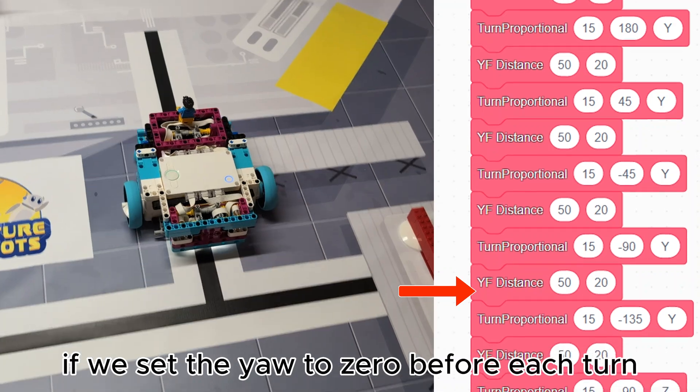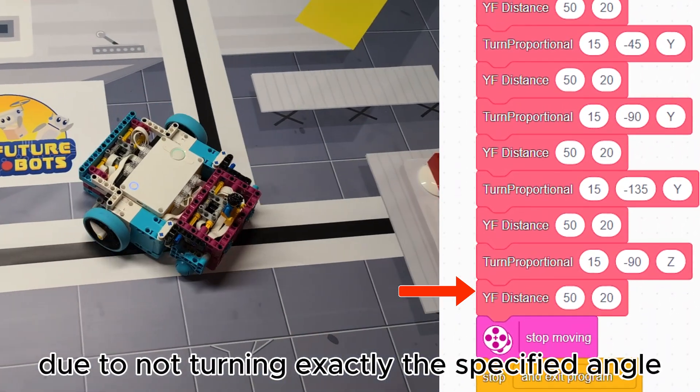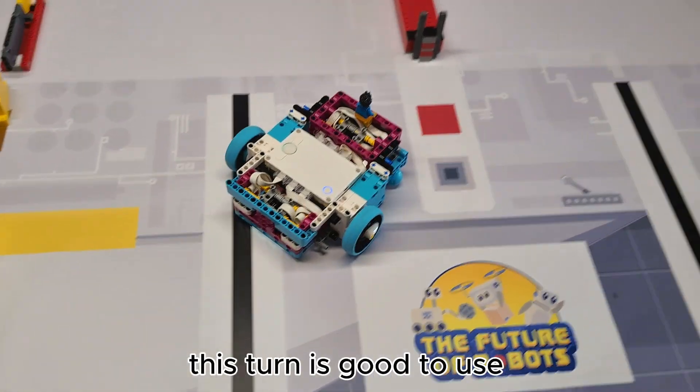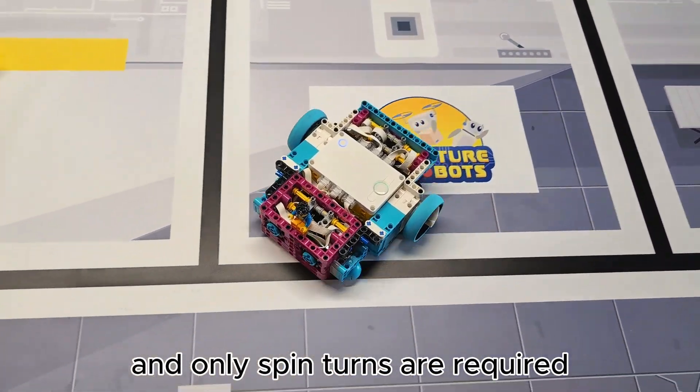If we set the yaw to zero before each turn, we accumulate errors due to not turning exactly the specified angle. The best idea is to only reset the yaw to zero for turns which pass through the 180 degree point. This turn is good to use when moving around with the gyro and only spin turns are required.